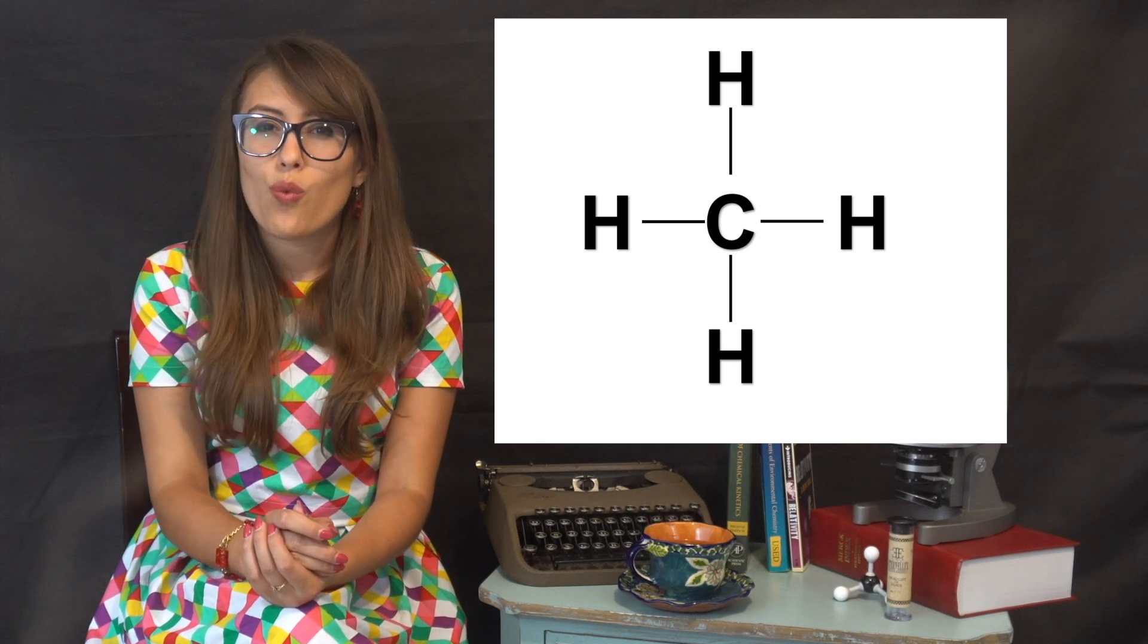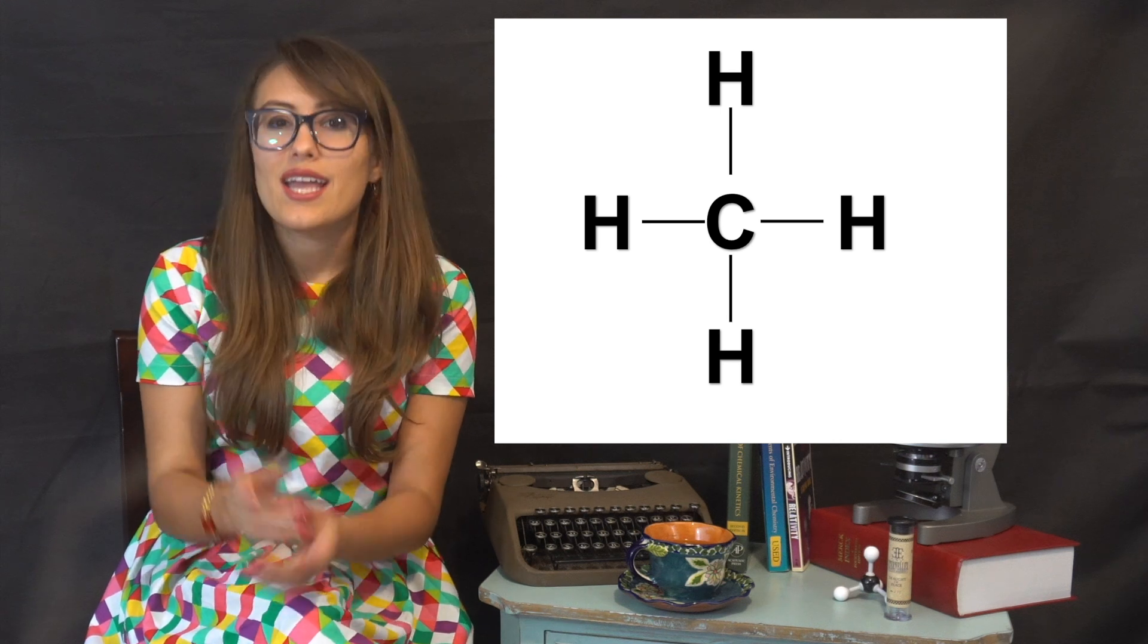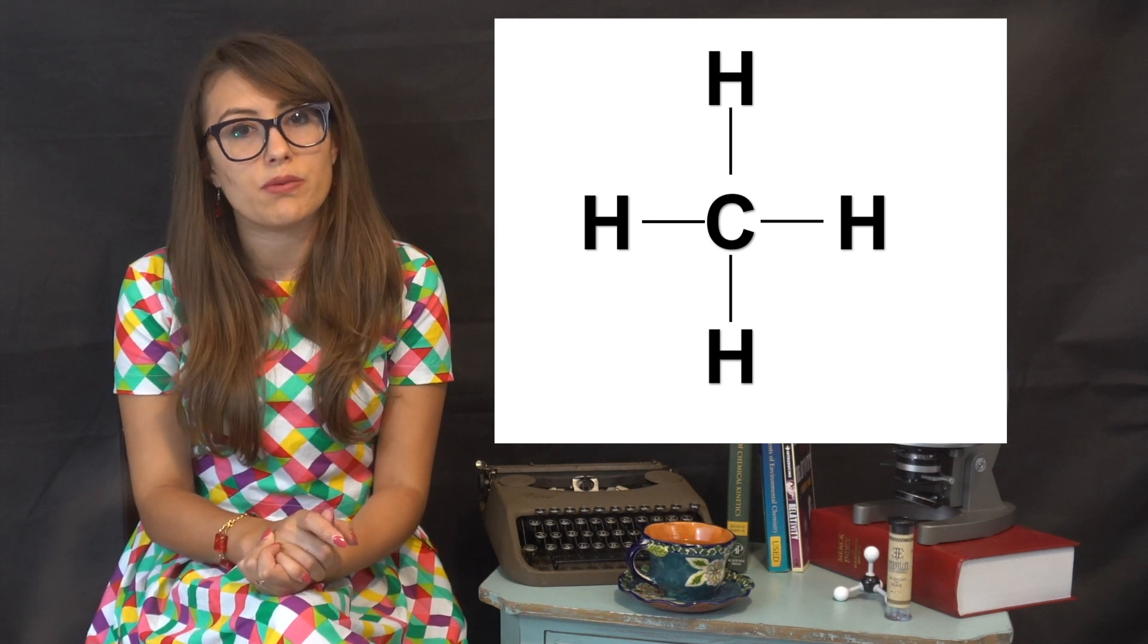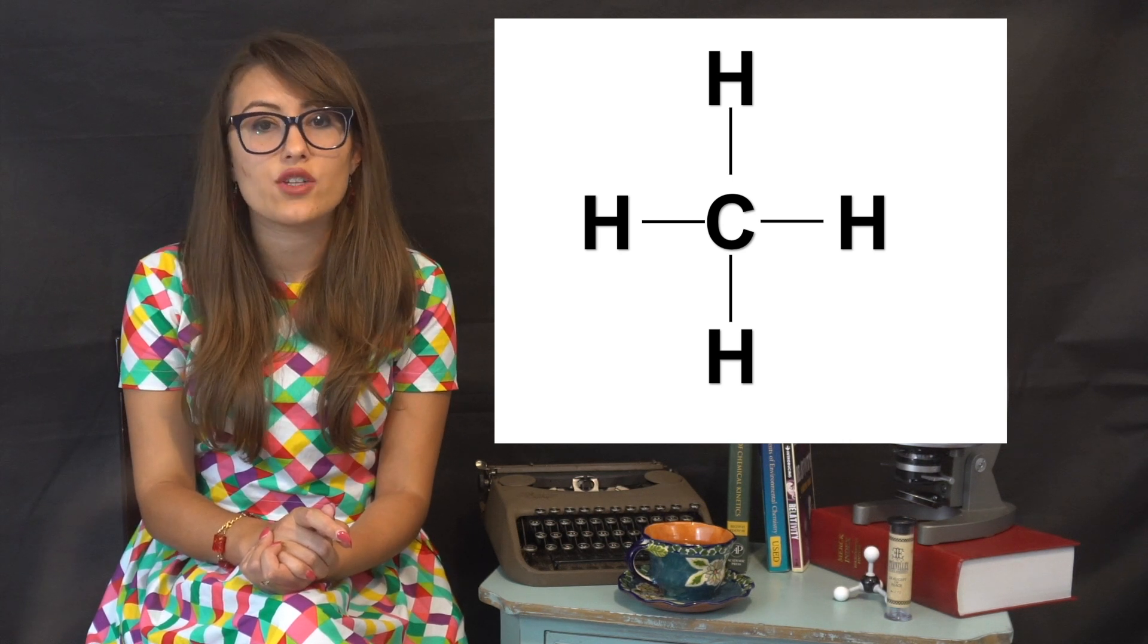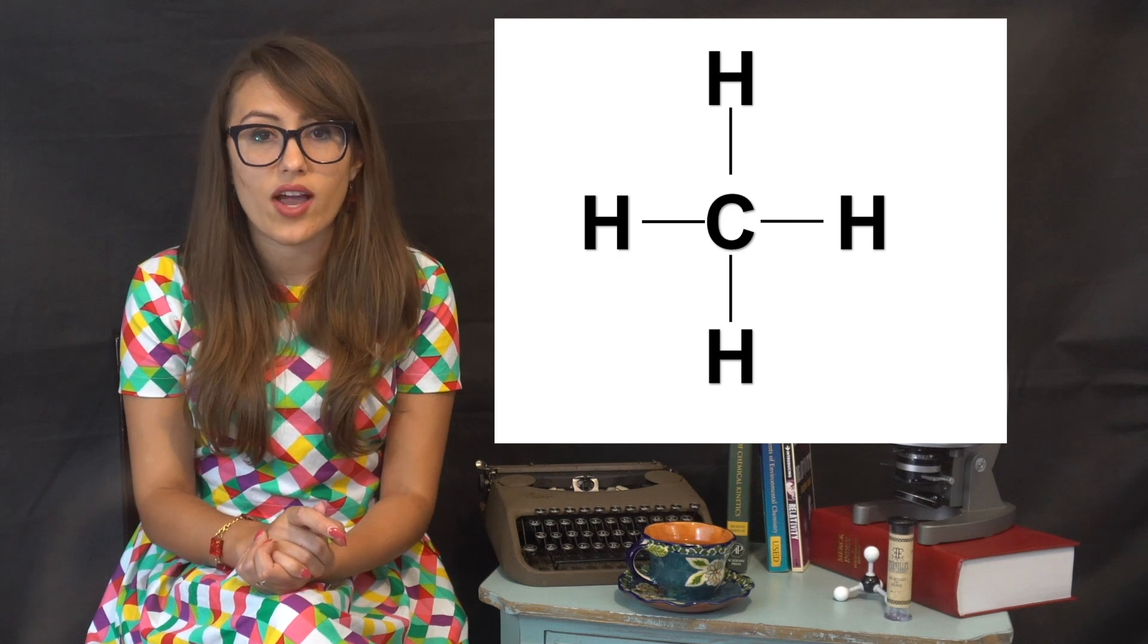Based on this information, what do you think our electron geometry will be? If you could answer that it would have a tetrahedral geometry, you would be correct. We can also determine that the bond angle between the hydrogen-carbon-hydrogen bond is about 109.5 degrees.